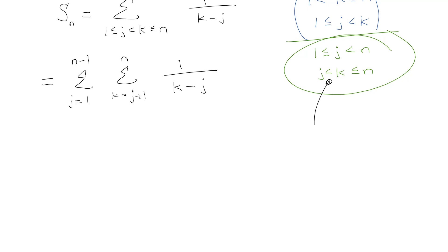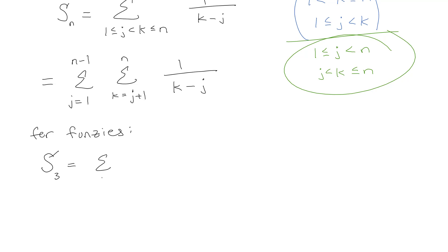That's just infinitely easier for me to understand. This doesn't actually help that much though — I still don't know what's going on. One strategy is to just start trying to see what this might be by plugging in a specific number. I'll pick n = 3.